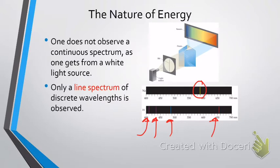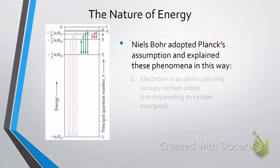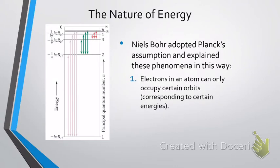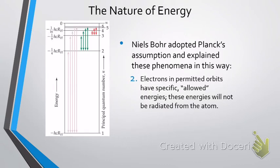So Niels Bohr really wanted to start to look into this, and what he did is he adopted Planck's assumption that energy was quantized. And so the first caveat of this is that electrons in an atom can only occupy certain orbits, and these orbits are specific energy levels.